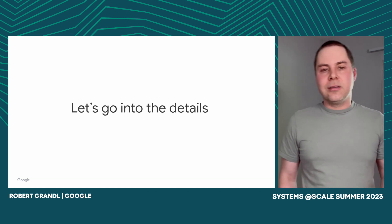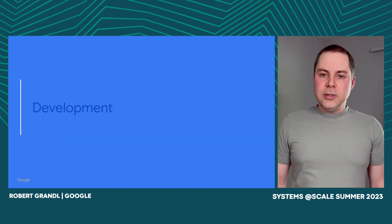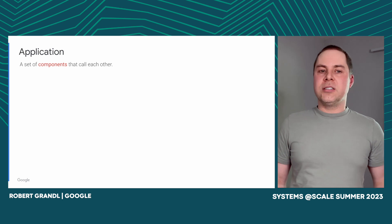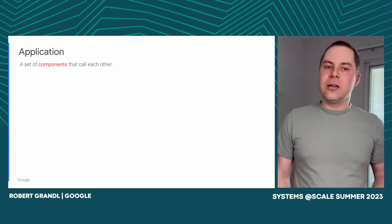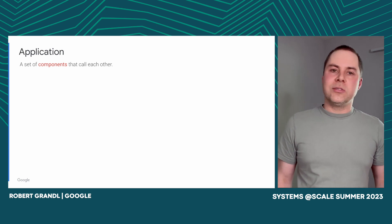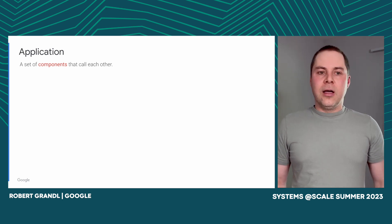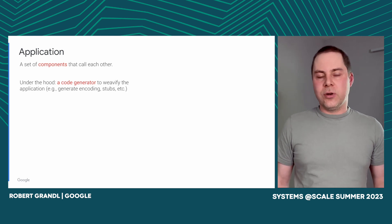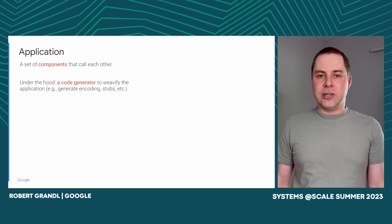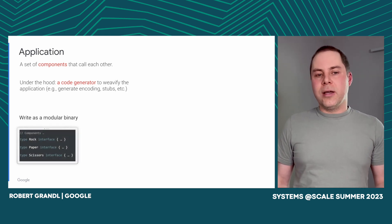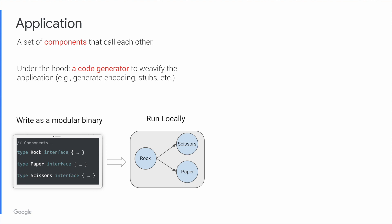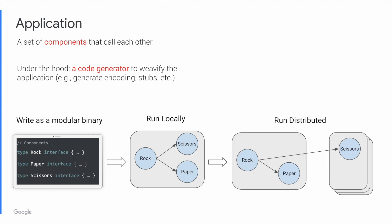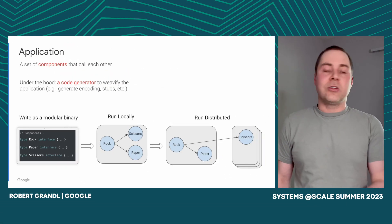Let's go into more details on how ServiceWeaver actually works. In terms of development, with ServiceWeaver you develop an application as a set of components that call each other, where a component is more like an actor-like unit in the actor-based model. Under the hood, a code generator will vivify the application — for example, generate encoding, stubs, registration, and so on. Your application is a modular binary where you write Go code, define your components as Go interfaces, and the ServiceWeaver runtime will deploy your application on the local machine as a single process, multiple processes, or distributed on multiple machines — replicated, traffic load balanced, and so on.